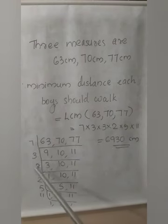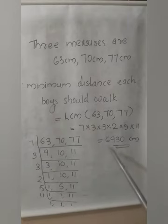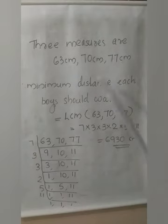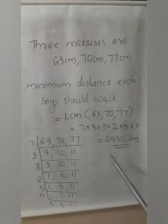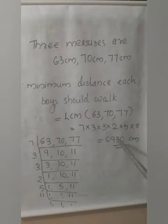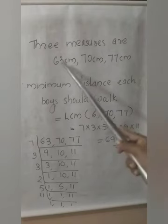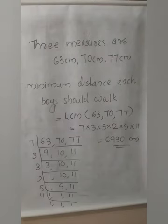So the LCM of 63, 70 and 77 is 7 × 3 × 3 × 2 × 5 × 11 = 6930 cm. The minimum distance each boy should walk is 6930 cm. This means 6930 is divisible by 63, 70 and 77 exactly.